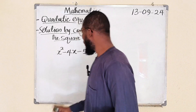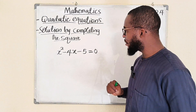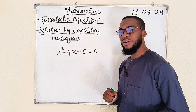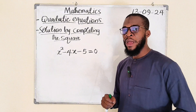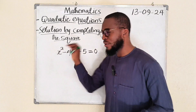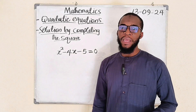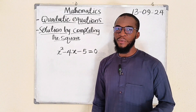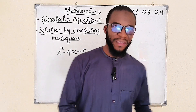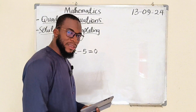We have a very simple quadratic equation here: x squared minus 4x minus 5 equals 0. We are going to go through the steps required to solve this particular equation by completing the square method. But before then, let me explain what completing the square is.